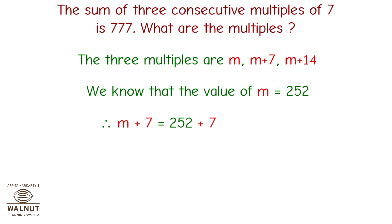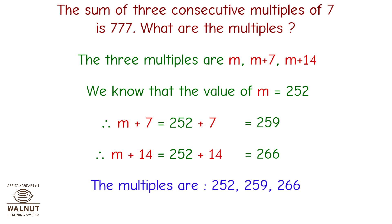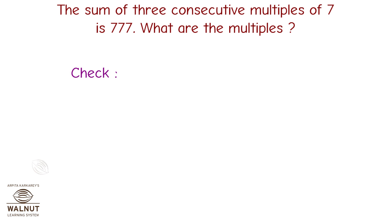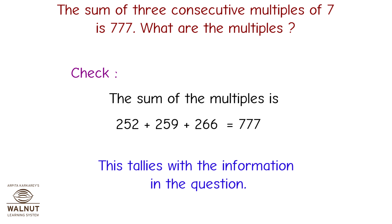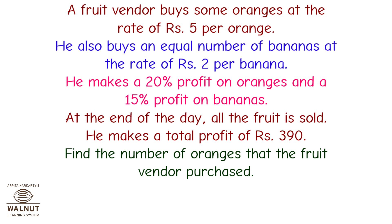Therefore m plus 7 equals 252 plus 7, which equals 259, and m plus 14 equals 266. The multiples are 252, 259, and 266. The sum of these multiples is 777, which tallies with the information in the question.